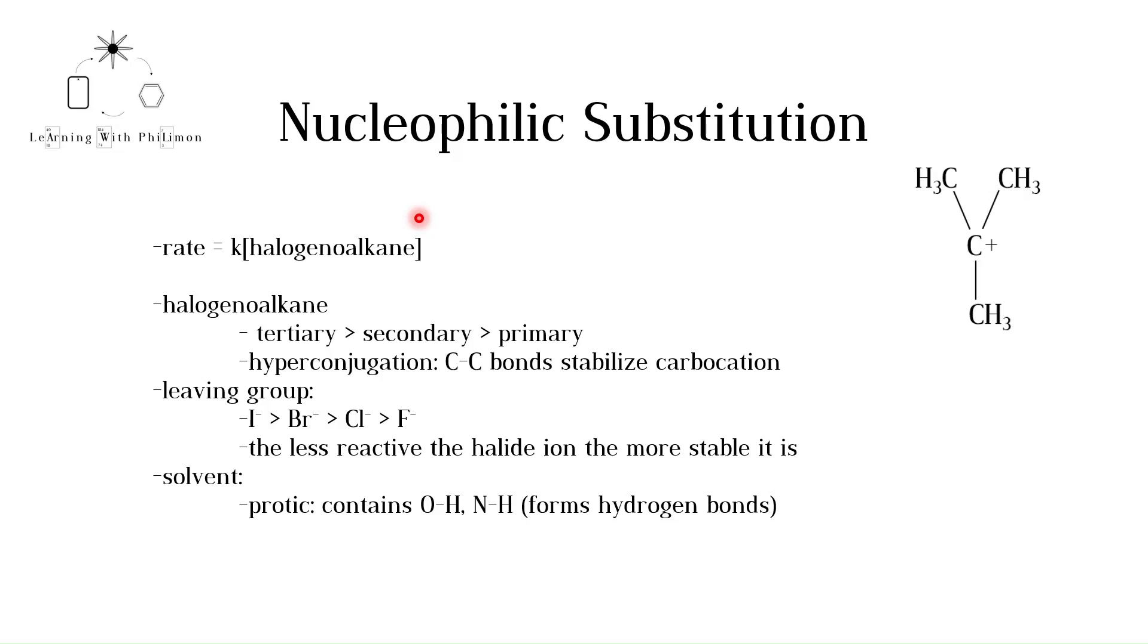There are other factors that affect the rate of substitution reactions, as discussed in the SN2 video. The first factor is the halogenoalkane itself. For SN1 reactions, tertiary react faster than secondary, which in turn react faster than primary halogenoalkanes. In fact primary halogenoalkanes do not react via SN1 but only via the SN2 mechanism.